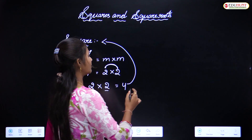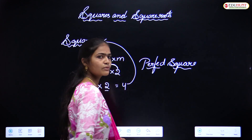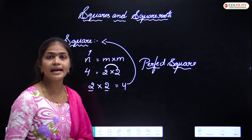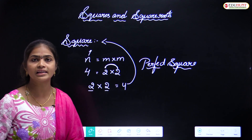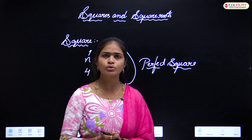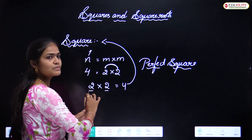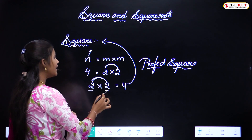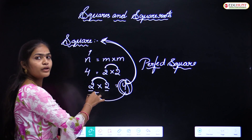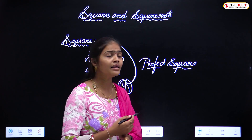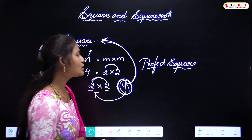Now what about a perfect square? A number which can be expressed as a product of two equal factors is called a perfect square. What is the difference between the definitions of square and perfect square? There is no real difference - both have the same meaning. Four is a square as well as a perfect square.